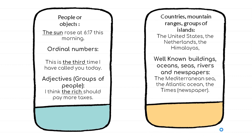When talking about names of countries in the plural, mountain ranges, or groups of islands, we use the definite article — for example, the United States, the Netherlands, the Himalayas. When talking about names of well-known buildings, oceans, seas, rivers, and newspapers, we also use the definite article — for example, the Mediterranean Sea, the Atlantic Ocean, and The Times, which is a newspaper. With all these cases, we use the definite article THE.